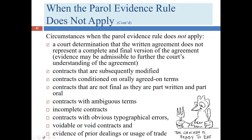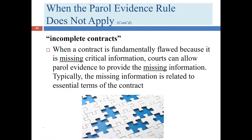Exception six: incomplete contracts. This is essentially the same situation as the partially integrated contract — critical information is missing. The court will allow extrinsic evidence in to fill those gaps, but will not allow testimony about the parts of the contract that are already tight and address all of those issues.